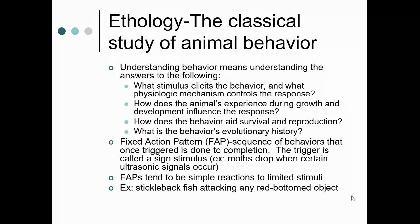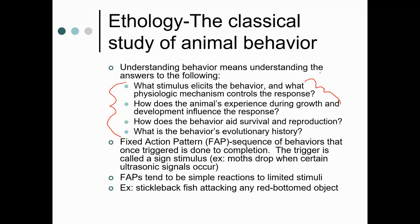One of the first classical studies of animal behavior is ethology. An ethologist looks at animal behavior from two perspectives: what stimulus elicits a behavior and what mechanisms control the response; and how the animal's experience during growth and development influences that response. Both of these deal with the proximal cause — what's happening right now that is causing this particular behavior. The other two questions — how the behavior aids in survival and reproduction, and the evolutionary history — are what we call the ultimate cause.